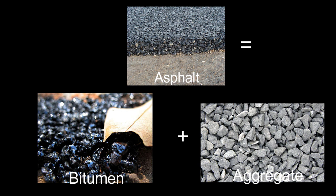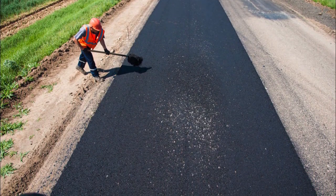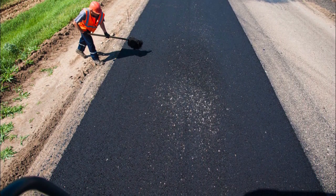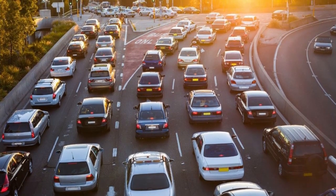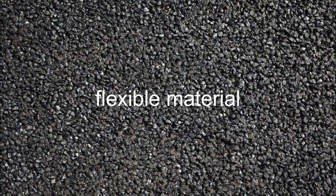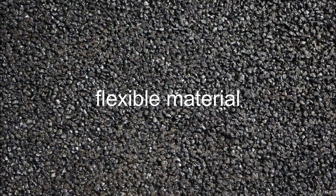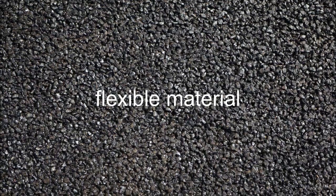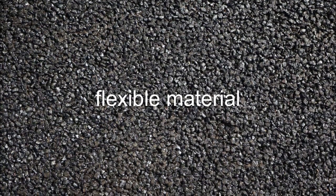Asphalt is a mixture of bitumen and aggregate, typically made from crushed rock or gravel. It is a popular choice for road construction because it is relatively inexpensive, easy to install, and can withstand heavy traffic and weather conditions. It is also a flexible material, which means it can expand and contract with temperature changes without cracking.